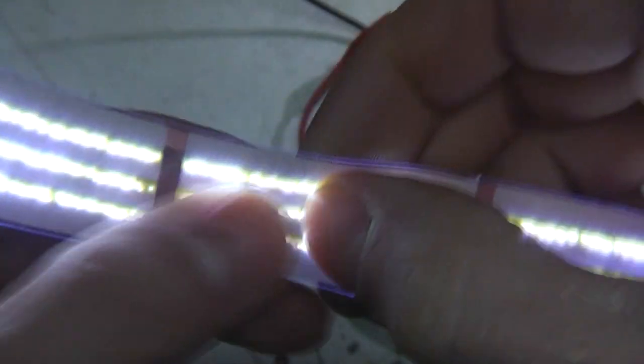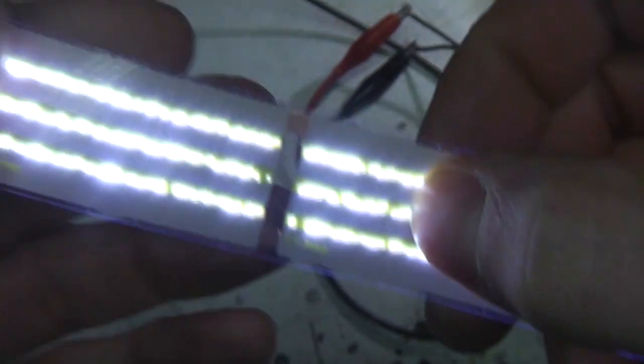Basically what they do is take wafers of blue LEDs and then chop them up into tiny little pieces to form an ink that's then printed onto a plastic carrier film. You can see I've pulled the end apart here so it's basically two plastic films.